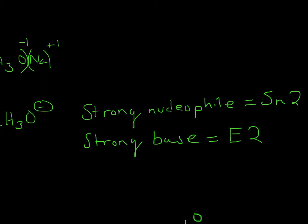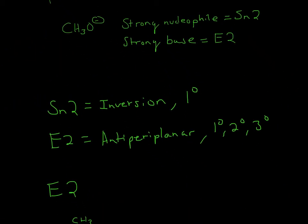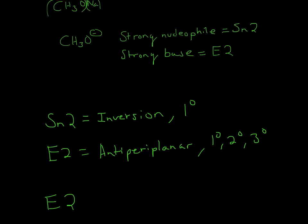So what do we know about SN2 and E2? SN2 has inversion and prefers primary (1°). E2 is anti-periplanar and prefers primary, secondary, and tertiary (1°, 2°, and 3°).